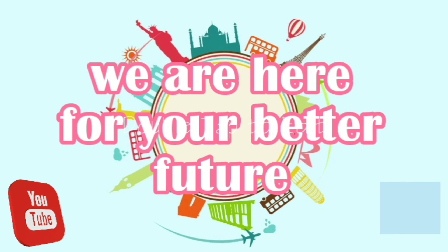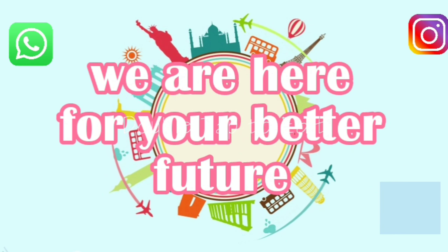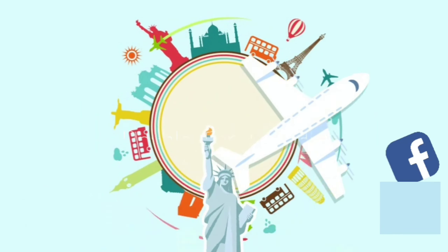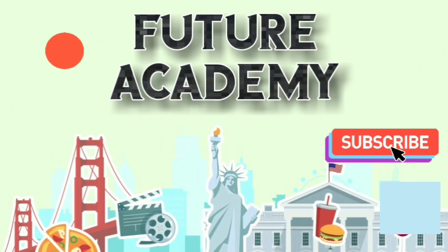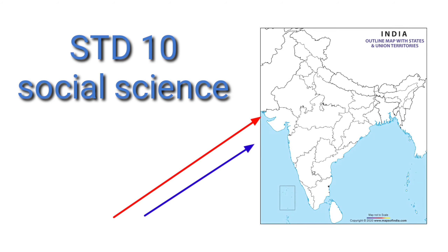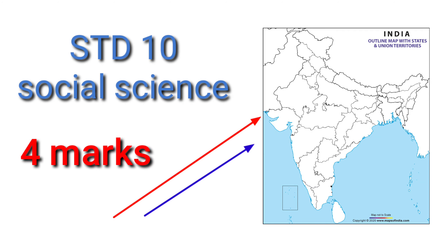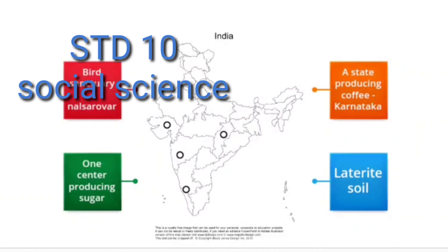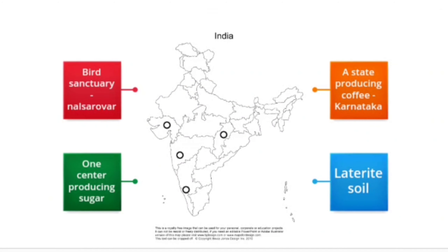Hello everyone, welcome to the Future Academy. We are here for a better future. Today in this video we are discussing the map. You know that in your social science paper there is a map for four marks, so we are practicing here. Here is a map of India.